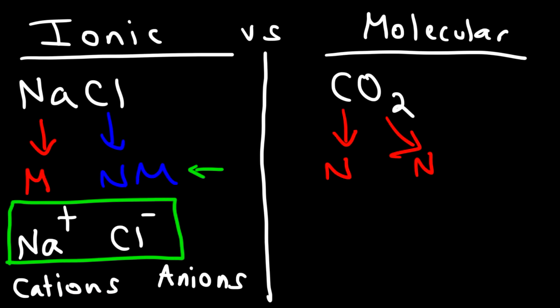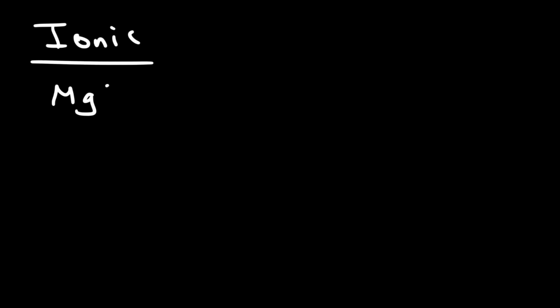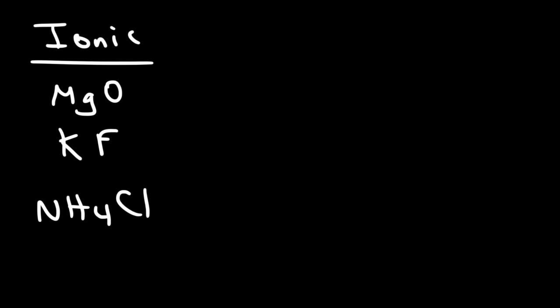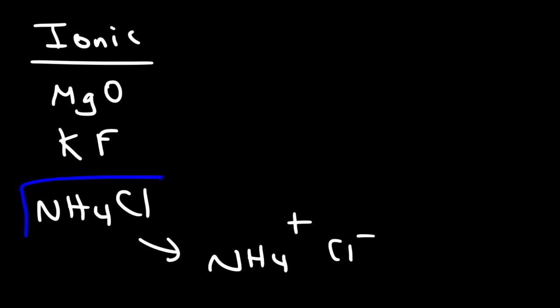Generally, if you see a compound with a metal and a non-metal, it's going to be ionic — for example, magnesium oxide or potassium fluoride. However, ammonium chloride is a rare exception: it's ionic because it consists of ions, but there's no metal in the compound — nitrogen, hydrogen, and chlorine are all non-metals. So this is one of those rare exceptions where you have an ionic compound without a metal.